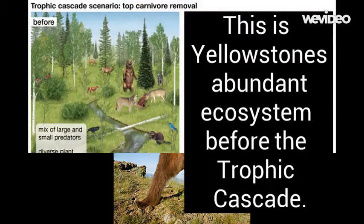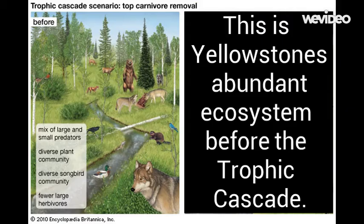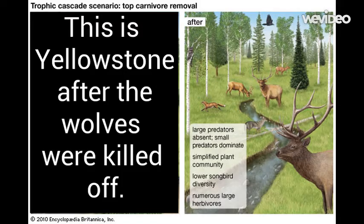This photo depicts the Yellowstone ecosystem before the wolf population became extinct. Notice the abundance of flora and fauna in this healthy system. This photo depicts Yellowstone decades after the wolf extinction. Notice the lack of flora and fauna.